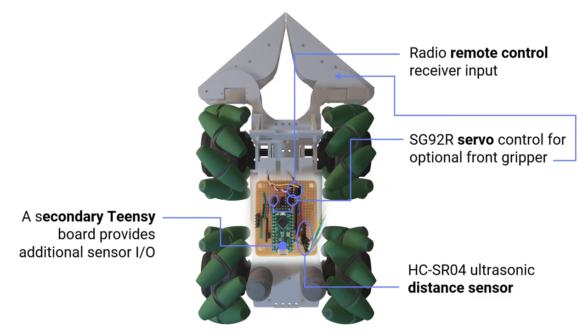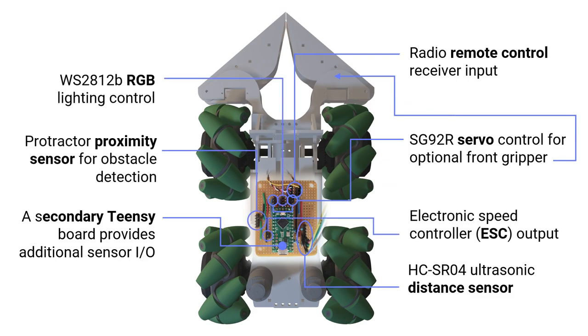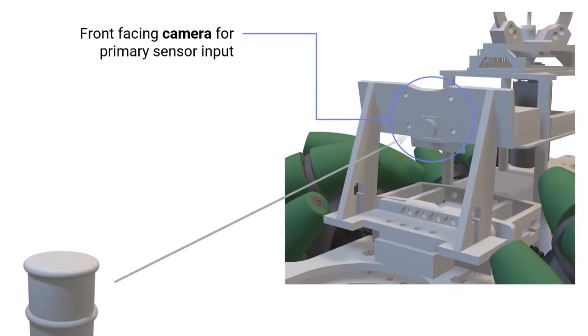A secondary electronics board provides additional I/O including radio remote control PPM decoding, servo control, distance sensors, and more. Primary sensor input is provided by the front facing camera. It operates at 10 frames per second and can be used for a range of tasks from line detection to color recognition.